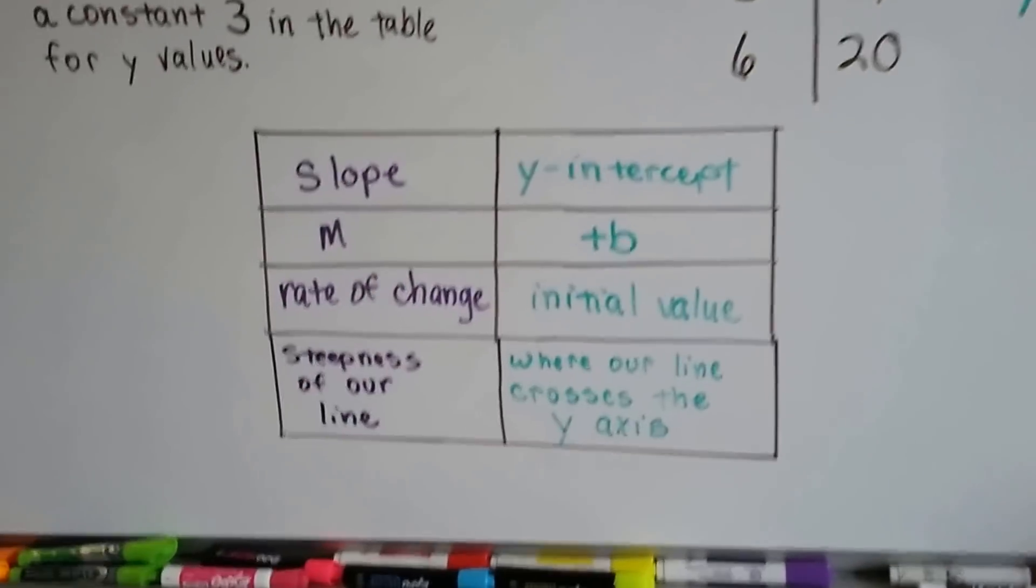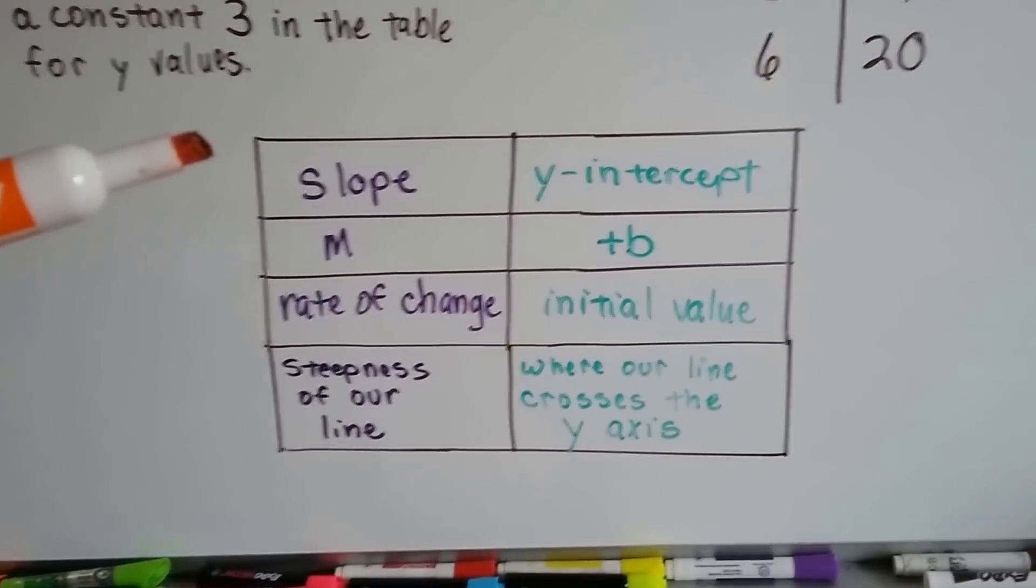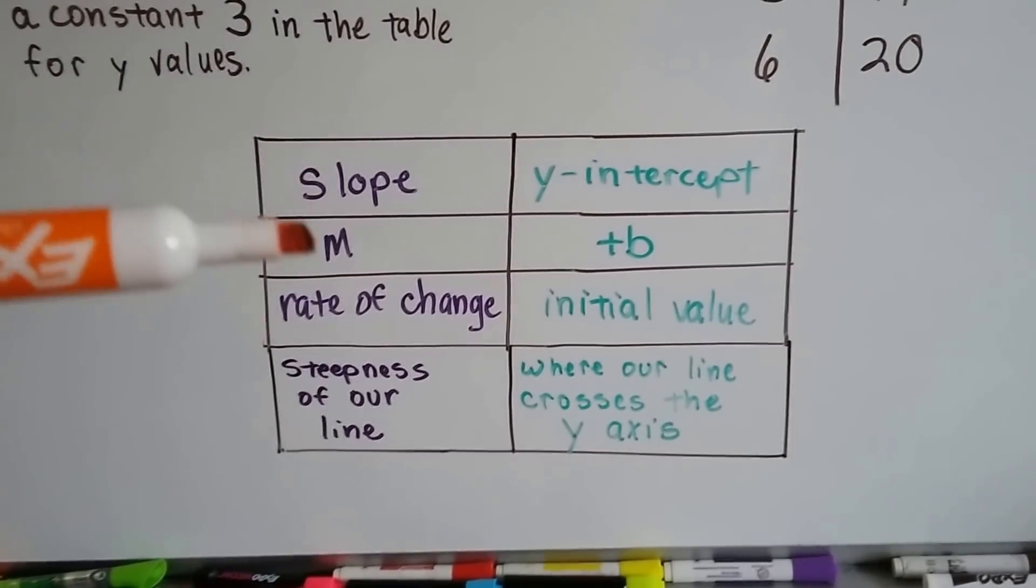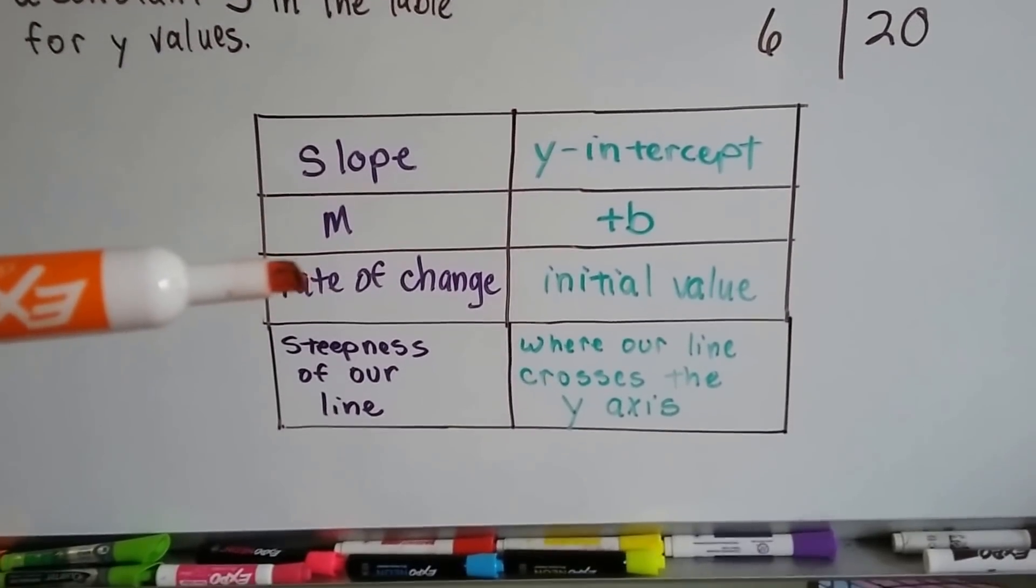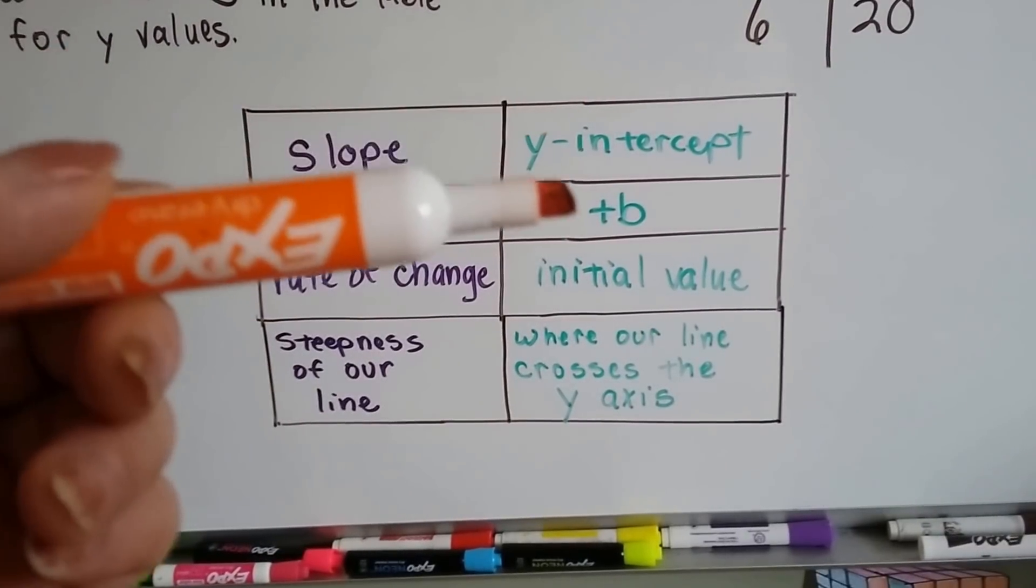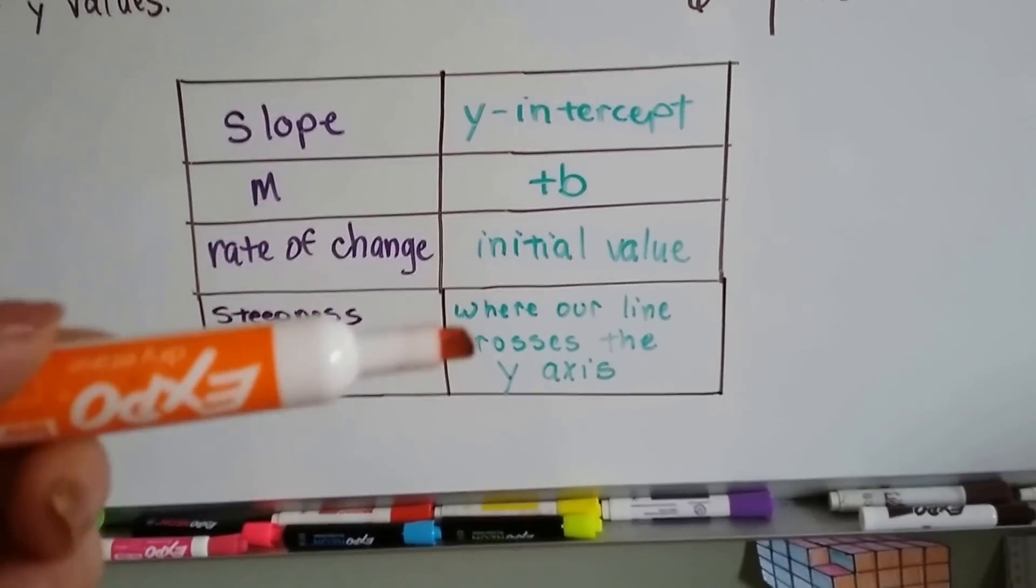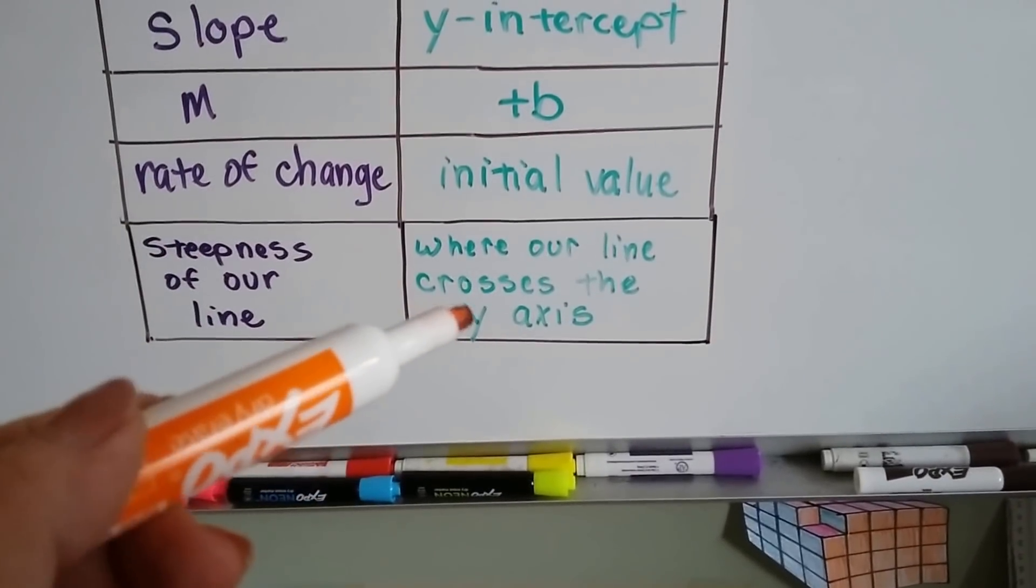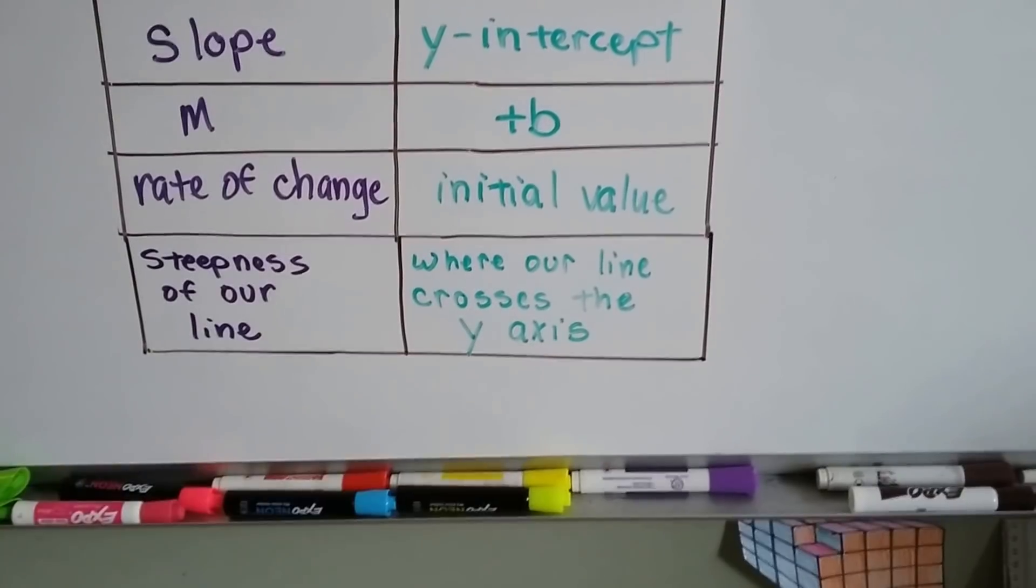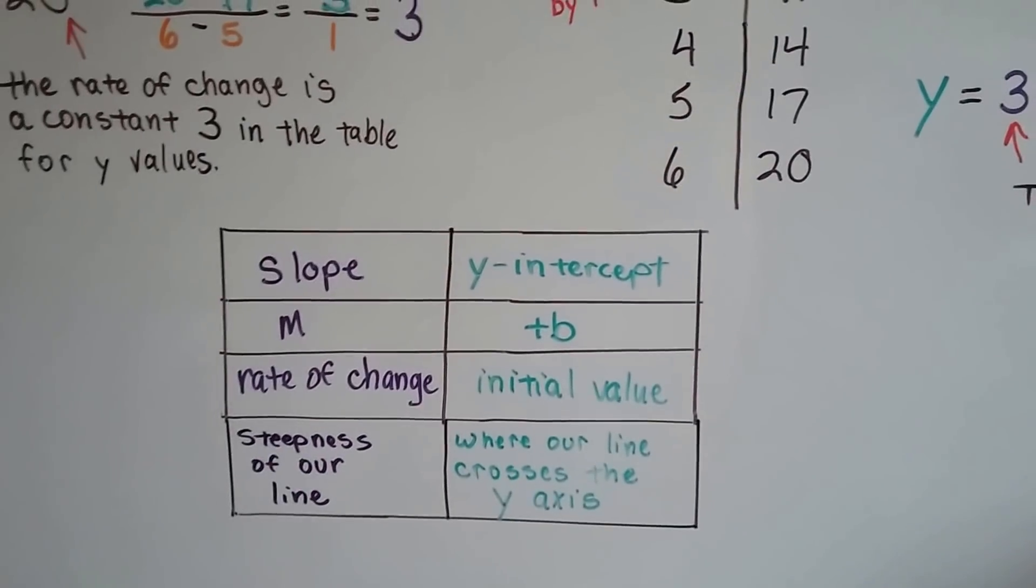That is all these words. They keep changing these words. Why can't they just pick one and stick with it? So for slope, it could also be called m. It could also be called the rate of change, but it's the steepness of our line. The y-intercept could be called plus b. It could be called the initial value or the initial value b. But it's where our line crosses the y-axis. If you saw the last video, you'll understand where it crossed.